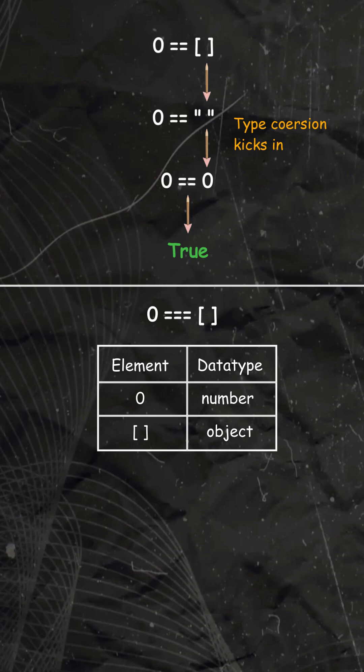Here 0 is of type number and empty array is of type object. So the type is different and since their types don't match we get false.